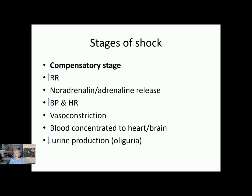The body then tries to compensate. The quickest way to get more oxygen in is to breathe quicker, so the respiration rate will increase. Then noradrenaline and adrenaline are released, which serves two functions: it increases blood pressure because the blood vessels are vasoconstricted — tightened up — concentrating blood flow to the heart and brain, and secondly it increases the heart rate and cardiac contractility.